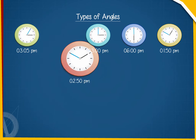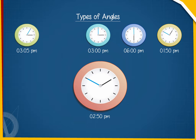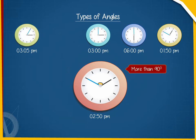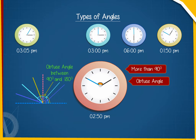At 2:50 o'clock, the arms make an angle more than 90 degrees, which means it is an obtuse angle. We define an obtuse angle as an angle measuring between 90 and 180 degrees.